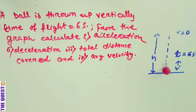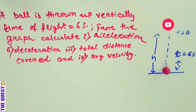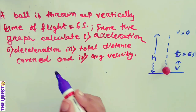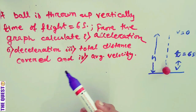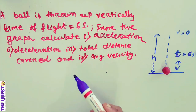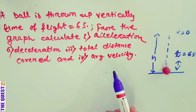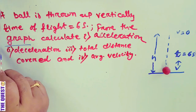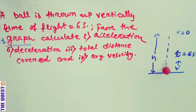In this example, a ball is thrown vertically upward and it gets back to the thrower in 6 seconds. From the graph, we have to calculate the acceleration, deceleration, total distance covered, and the average velocity of the ball. Here the graph must be a velocity-time graph.